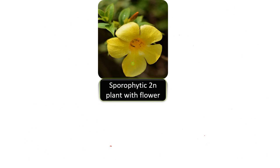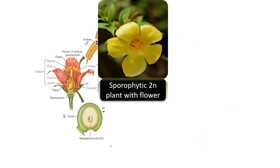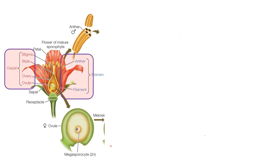In angiosperms, the dominant phase is the sporophytic phase, so this is a sporophytic plant with a flower. To understand the life cycle, first we need to understand the structure of a flower. The male part of the flower is called the stamen; it comprises an anther and a filament, and these two together are called the stamen.